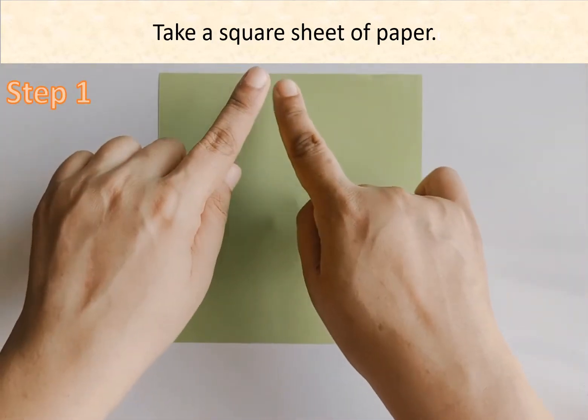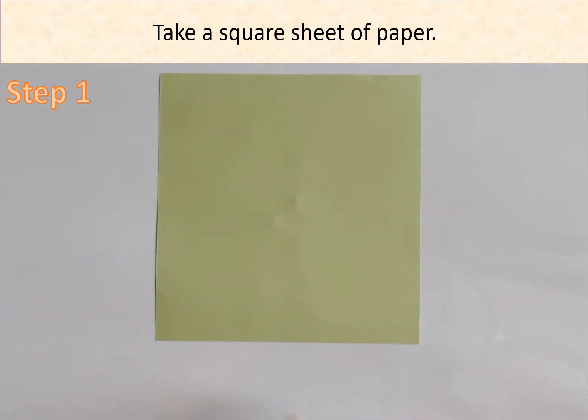Step 1. Take a square sheet of paper. Here I am using a standard size origami sheet.